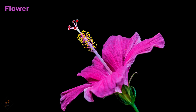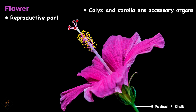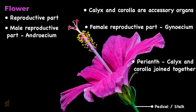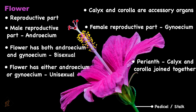The reproductive part of a plant is the flower. The bottom part of the flower is called the stalk or pedicel. On the pedicel we can observe various structures: calyx, corolla, androecium, and gynoecium. Calyx and corolla are accessory organs; androecium is the male reproductive organ and gynoecium is the female reproductive organ. In some flowers like lily, calyx and corolla are joined together and are known as perianth. When a flower bears both androecium and gynoecium it is a bisexual flower; if it has either androecium or gynoecium it is a unisexual flower.